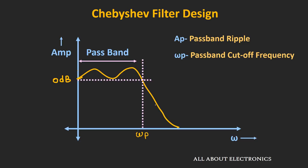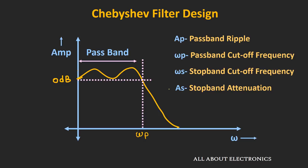Beyond this cutoff frequency, you will see the monotonic response of the filter. Below this frequency, you will see the ripple in the passband. The remaining two parameters are the stopband cutoff frequency and stopband attenuation. The stopband cutoff frequency is the frequency beyond which the stopband of the filter will start.